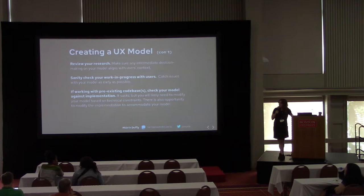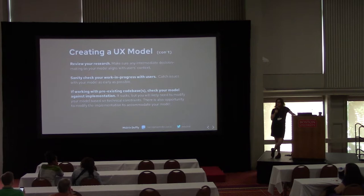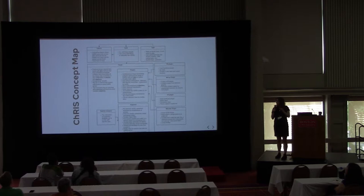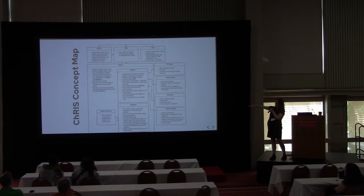Along the way, review your research and sanity check with any mentors. If you're working with a pre-existing codebase, check your model against the implementation. It's lovely when you can implement your UX model exactly as designed, but you'll probably have to make compromises based on how the back end is implemented — though there's lots of opportunity to change the back end to support your design too. Here's an example concept map showing different components of CRIS: you get data, put it into a feed, then chain together plugins and pipelines. Pipelines are compositions of plugins that manipulate the data to produce output.